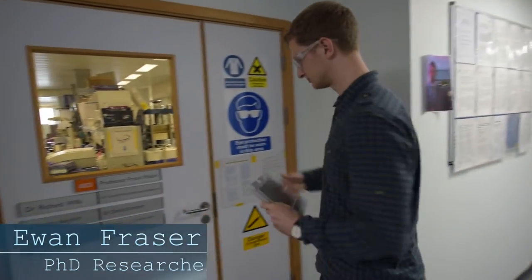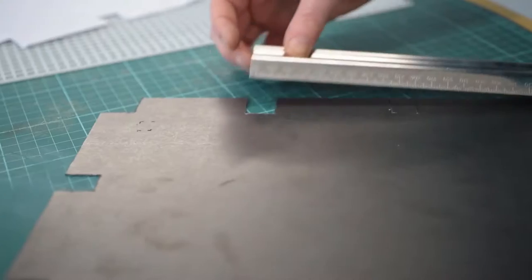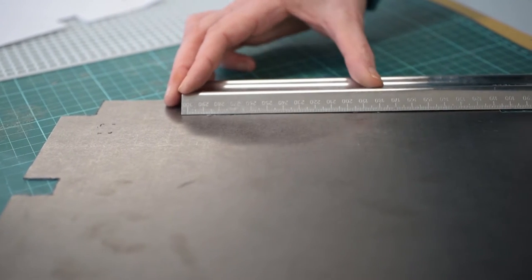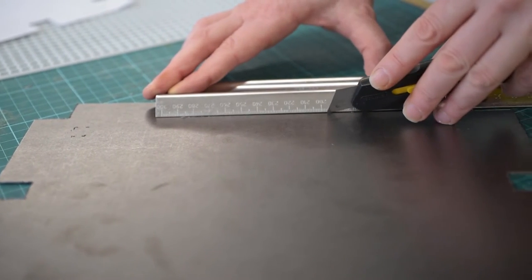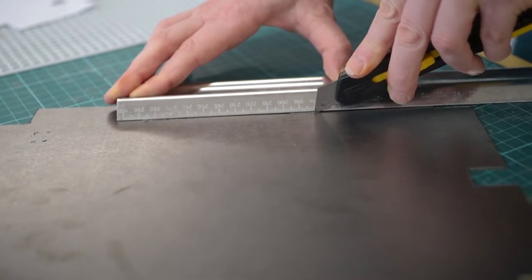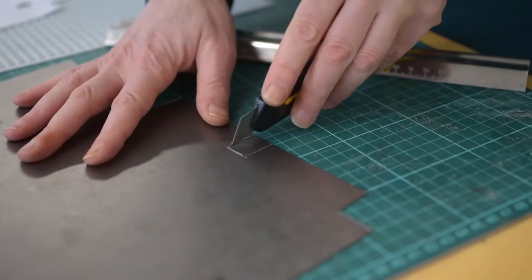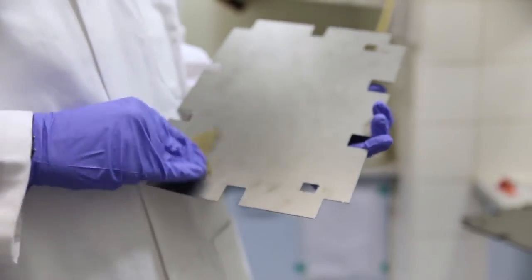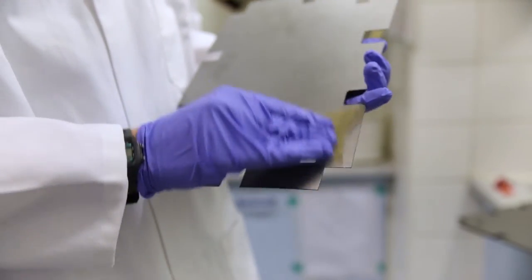So now we have the components, let's go and prepare the electrodes to start to assemble the battery. Firstly, the graphite electrodes have to be cut to the correct size and shape. They are then sanded to remove the polymer layer and to improve adhesion.